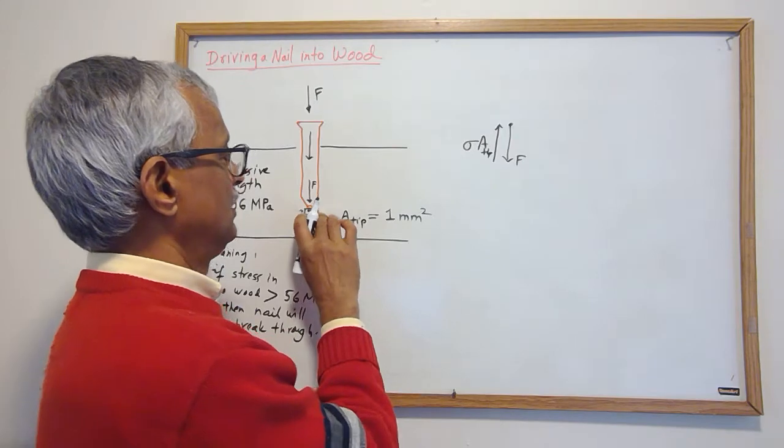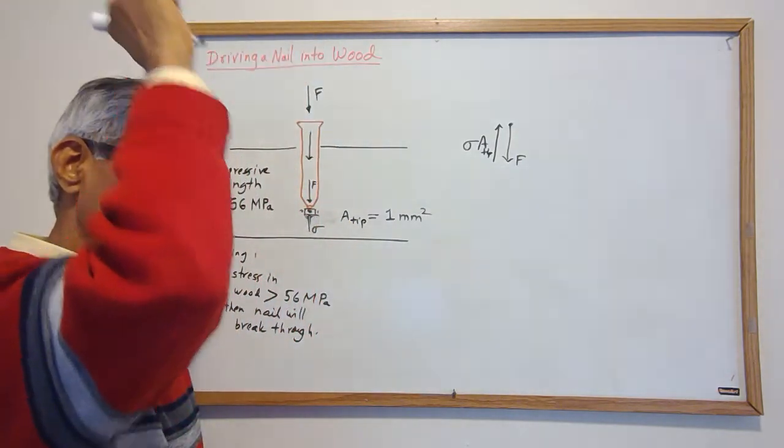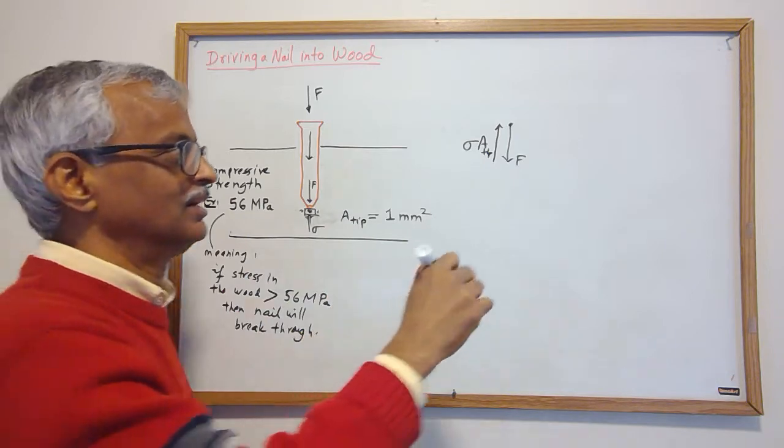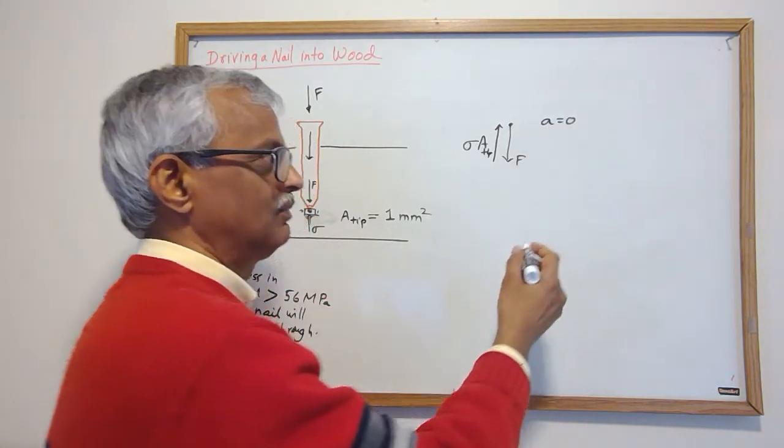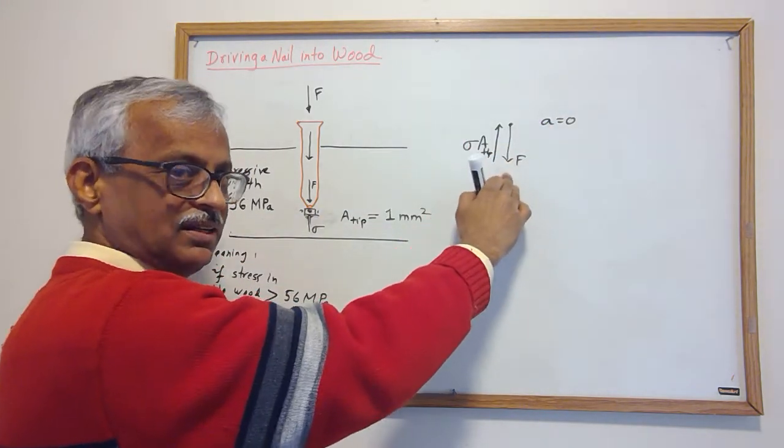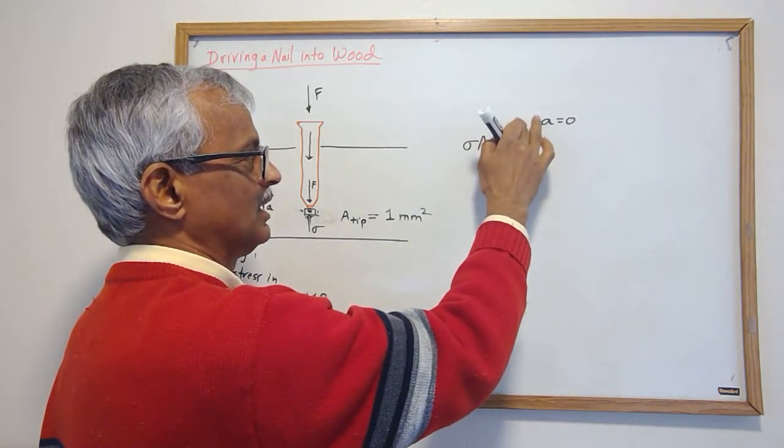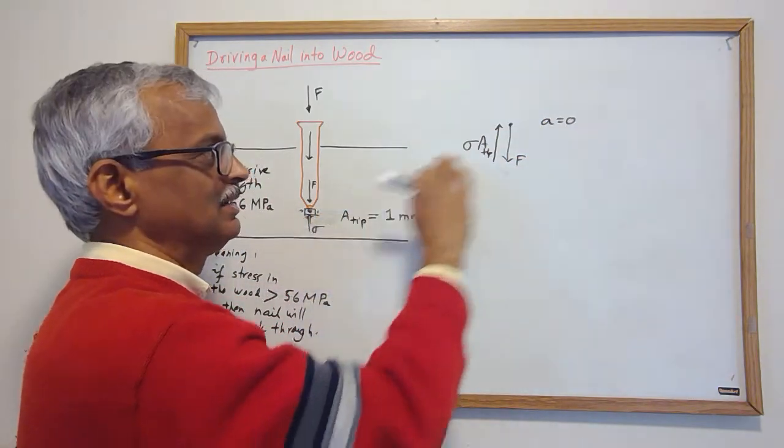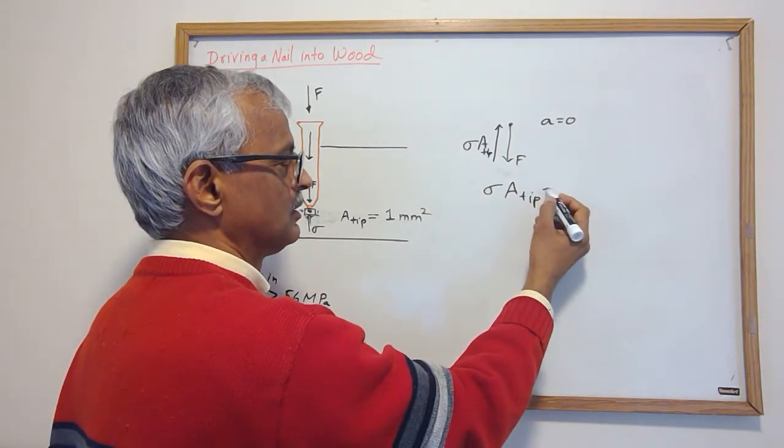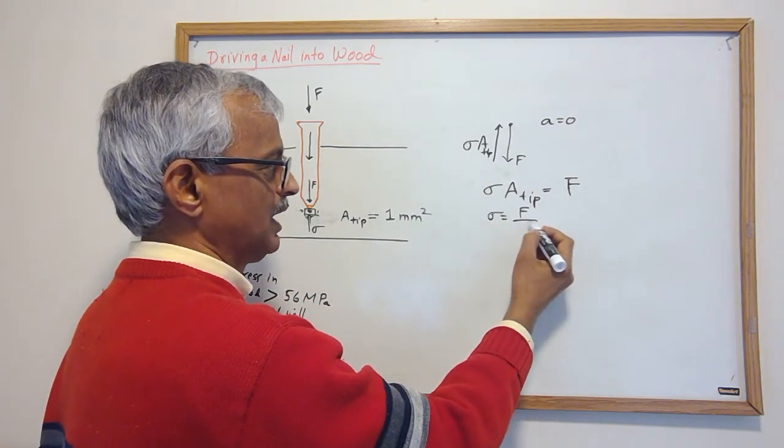So this is a balance, and if this object is not going to give—I'm applying a force maximum, but a little bit less, so it's not giving—it's not going to have acceleration. If force is any greater than this, then it will accelerate. We're looking at the critical time. So sigma A_tip equals F, balancing, so sigma has to be F over A_tip.